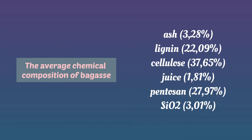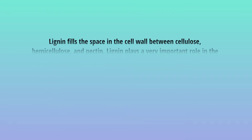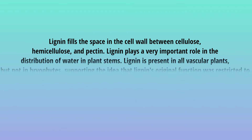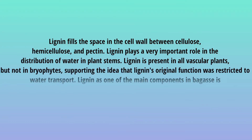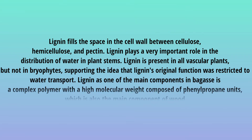Bagasse is produced as much as 32 percent of the weight of milled sugarcane, with 3.2 percent being lignin. Lignin fills the space in the cell wall between cellulose, hemicellulose, and pectin. Lignin plays a very important role in the distribution of water in plant stems.